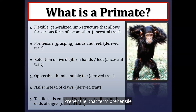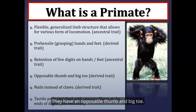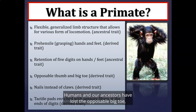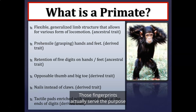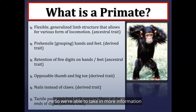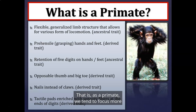Prehensile means grasping abilities. Primates have prehensile hands and feet, retaining five digits on all hands and feet, and have an opposable thumb and big toe. Humans have lost the opposable big toe — the hallux — since we are predominantly bipedal. Primates have nails instead of claws, and tactile pads enriched with sensory fibers at the ends of all digits. These fingerprints enhance our sensory functions, allowing us to take in more information about the environment from our fingertips and toe tips.